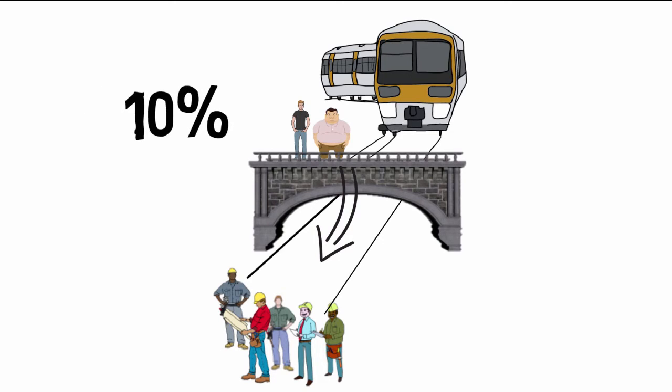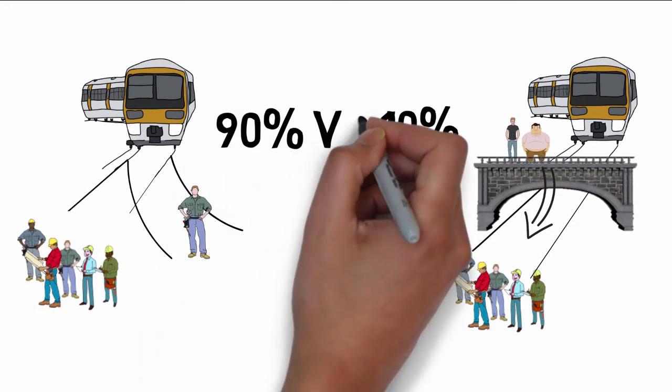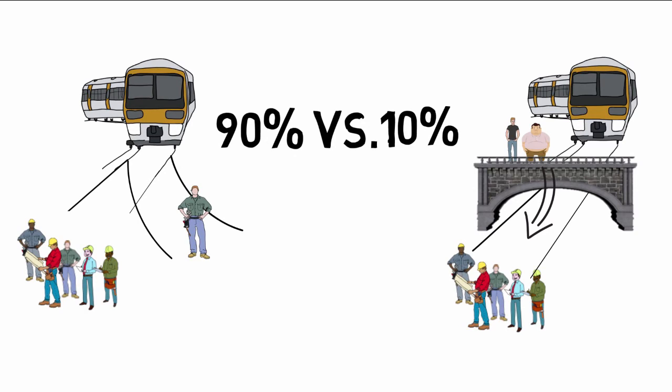10%. Only one in ten people would push the man off the bridge. This result has been at the heart of what has puzzled philosophers and researchers for decades. Why is there such a huge disparity between how people react to the two scenarios?